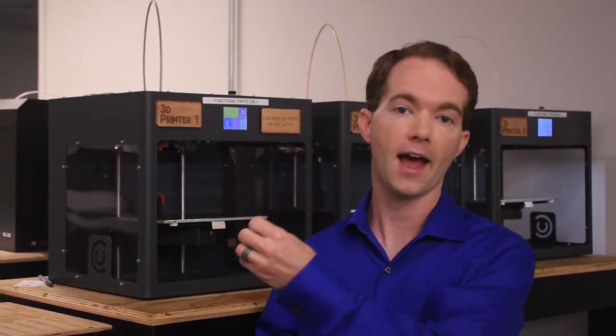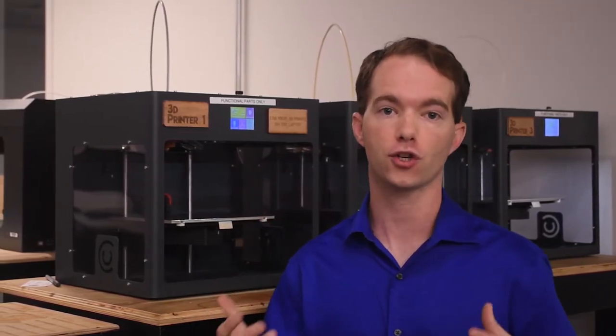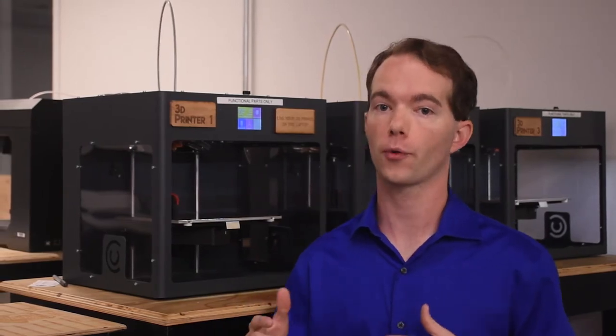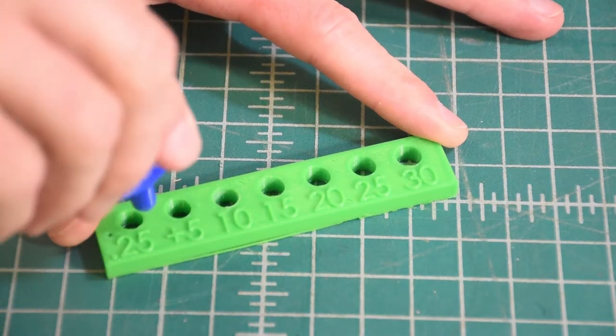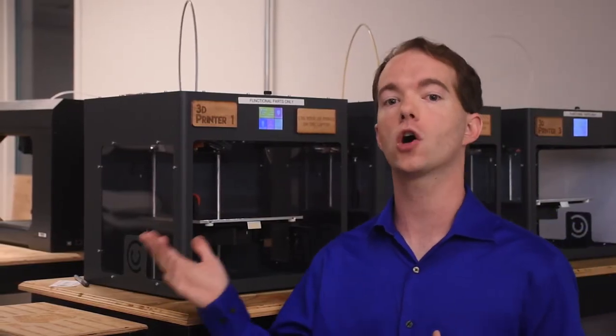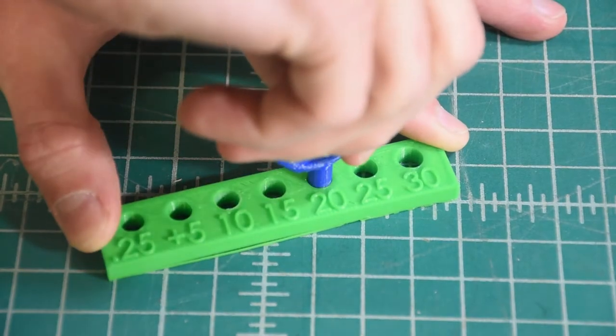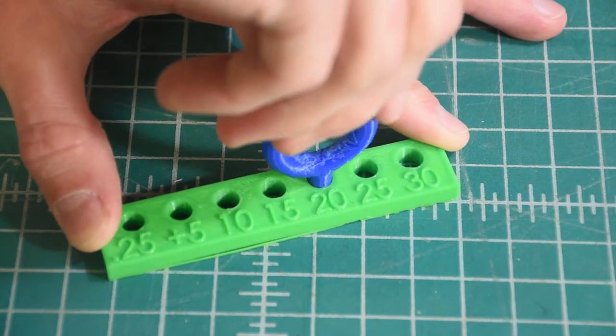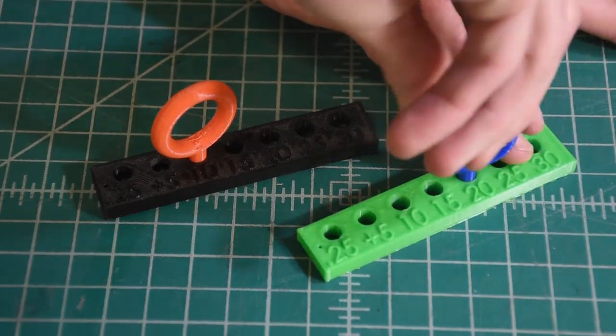You cannot design and print a half inch pin and expect it to fit in a half inch hole. Nor can you print a quarter inch hole and expect to slide a quarter inch bolt through it. I printed a test block and a pin a long time ago and found that you typically need to allow 20 thousandths or half a millimeter of clearance for your parts to fit nicely.